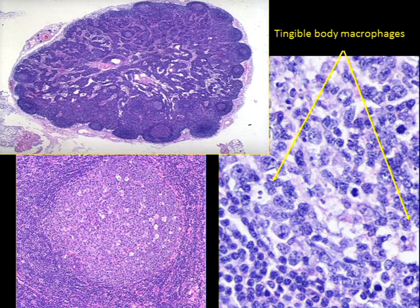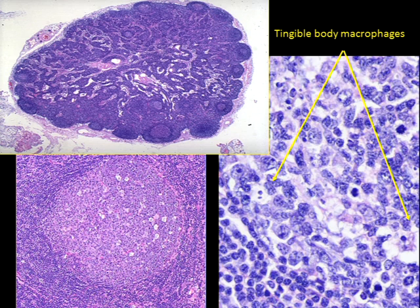Looking at a reactive lymph node at low power: towards the outside we see the outer cortex with primary follicles — the ones where we do not see a germinal center. Next to them are secondary follicles with a lighter round germinal center in the middle. In between the cortex we have our paracortical areas, and in the deep center of the lymph node is the hilum with lots of sinuses. A reactive germinal center contains tangible-body macrophages, which appear as clear areas.